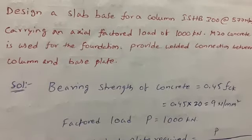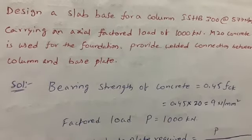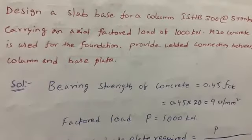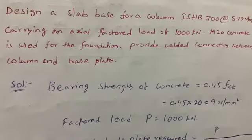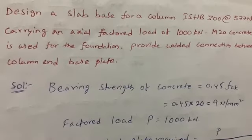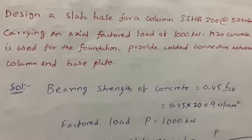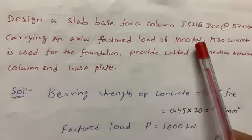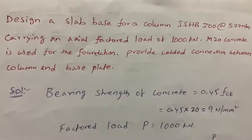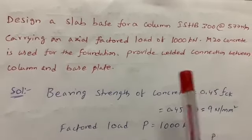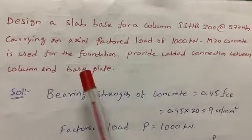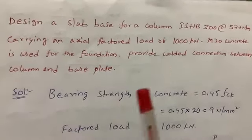Hello everyone. In this video I'm going to explain how to design a slab base in design of steel structures. The problem is: design a slab base for a column ISHB 300 at 577 N/m, which is carrying a load of 1000 kN. M20 concrete is used for the foundation.